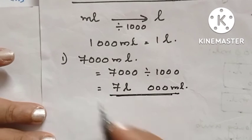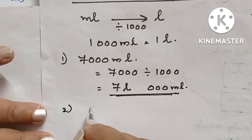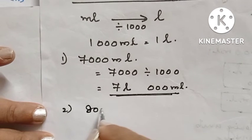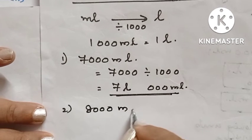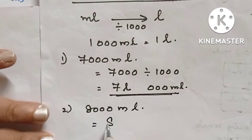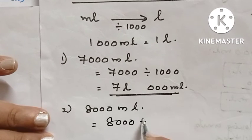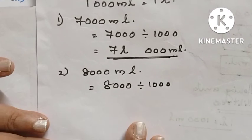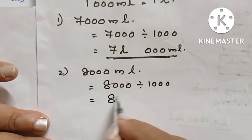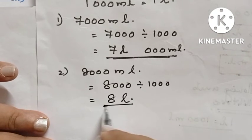The next question is eight thousand milliliters. Eight thousand divided by one thousand — when we are converting milliliters to liters, we divide by one thousand. The answer is eight liters.